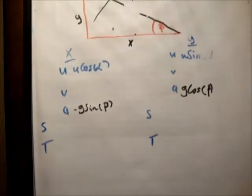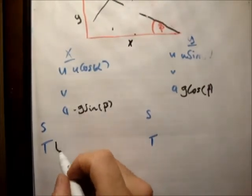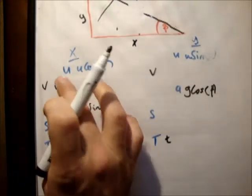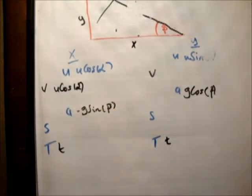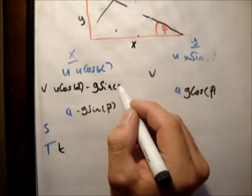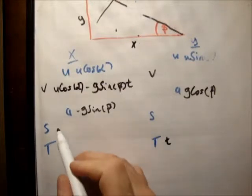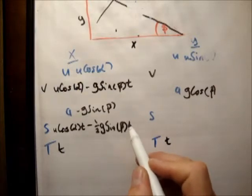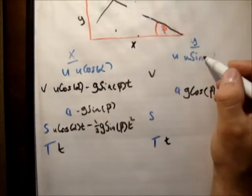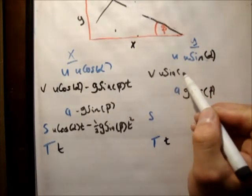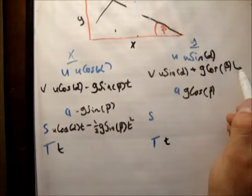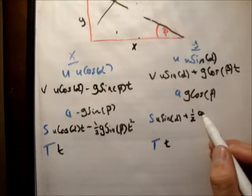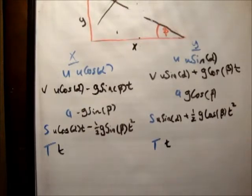Next thing we need to do is put in expressions for our v and s. So v equals u plus at. So that's u cos(alpha) minus g sin(beta)t. s equals ut plus 1/2 at squared, so that becomes u cos(alpha)t minus 1/2 g sin(beta)t squared. Similarly, v_y becomes u sin(alpha) plus g cos(beta) times t, and s_y becomes u sin(alpha) plus 1/2 g cos(beta)t squared.